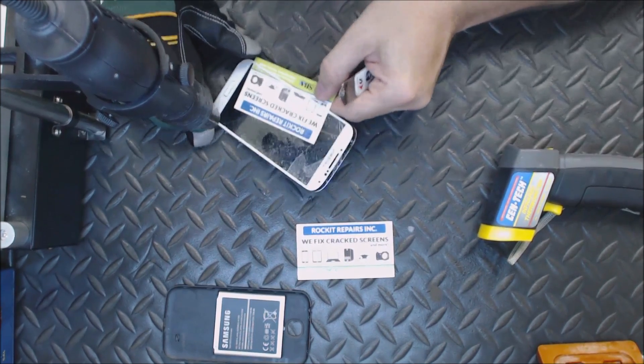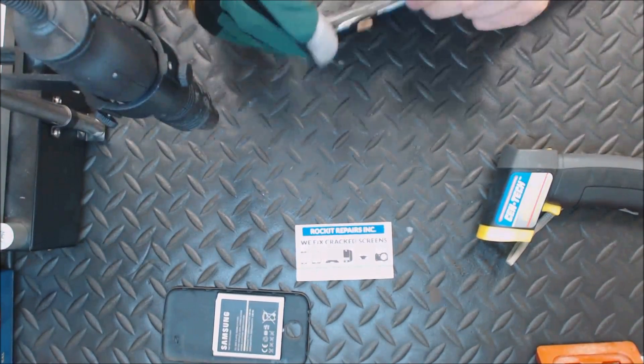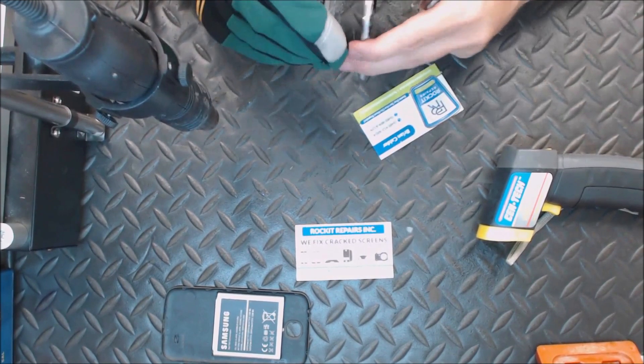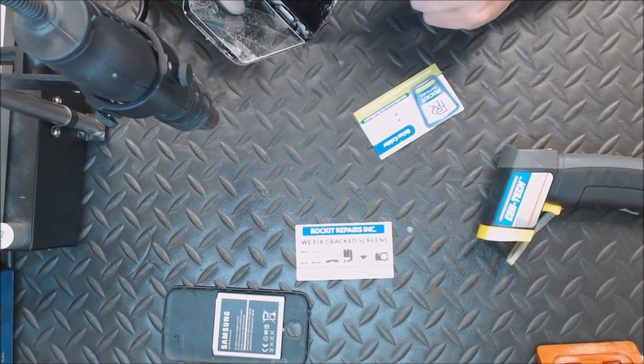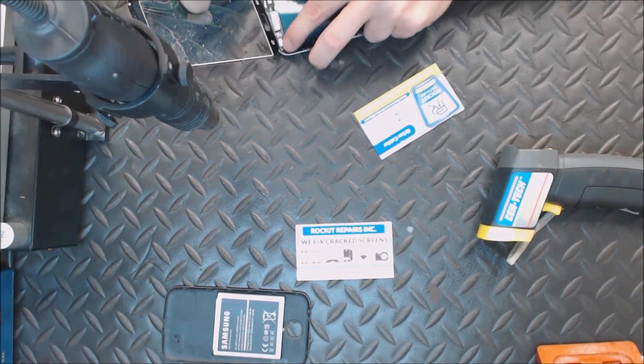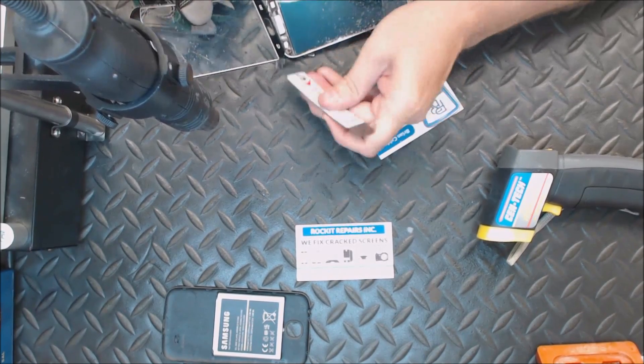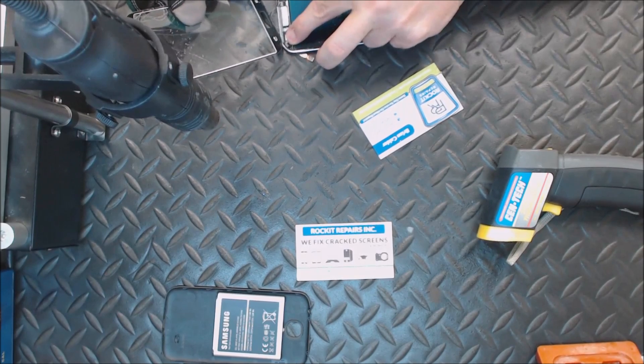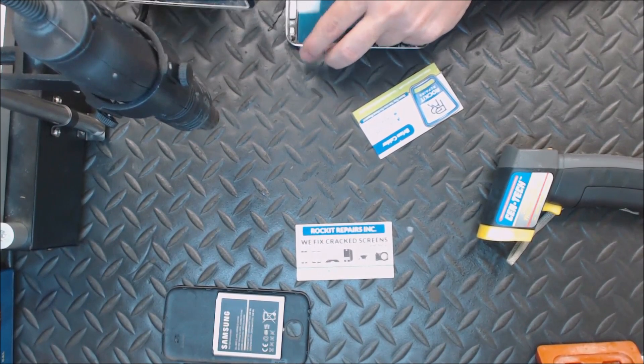Alright, so the glass is now separated. Now we need to separate the power button, the back button, and the bottom. Make sure this does not break. A lot of times you will have to pull it off the actual glass without breaking the cable. If you do break the cable, you can replace it.